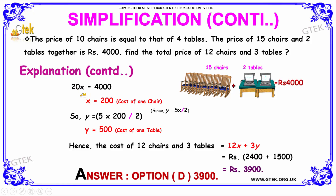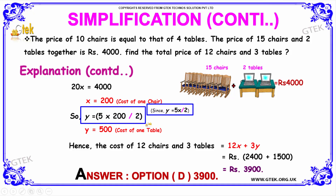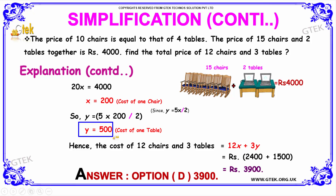Simplifying, we get X is equal to 200. Therefore, the cost of 1 chair is Rs. 200. Substituting X equal to 200 in Y is equal to 5X by 2, we get Y is equal to 500. That is, the cost of 1 table is Rs. 500.